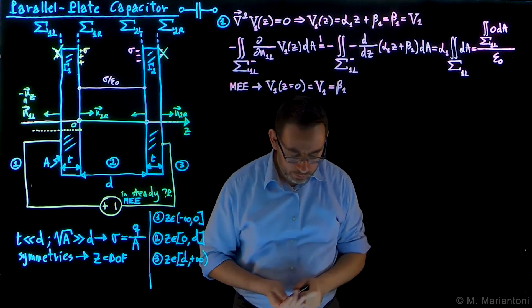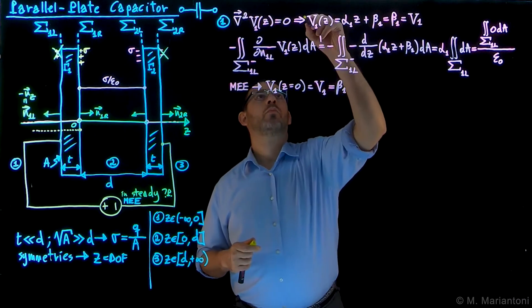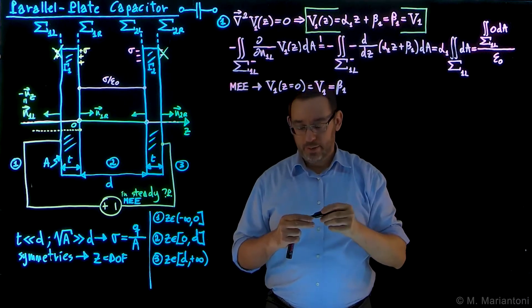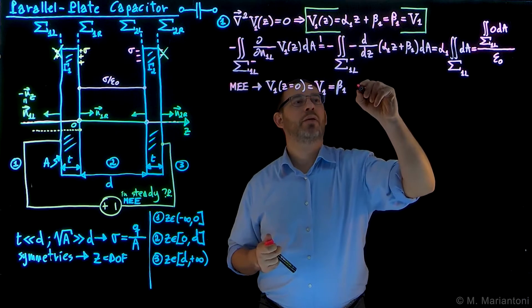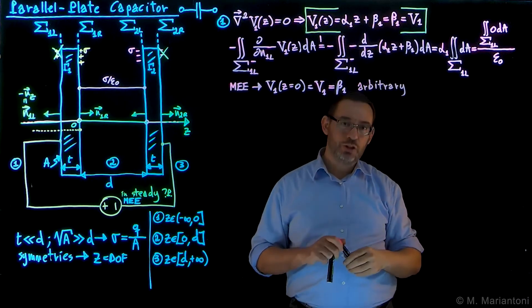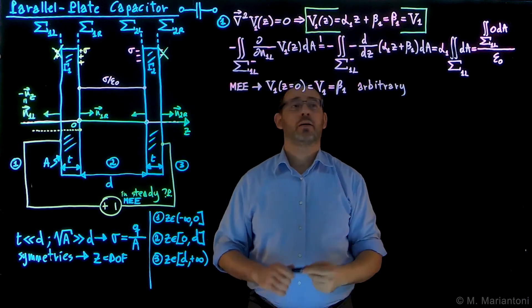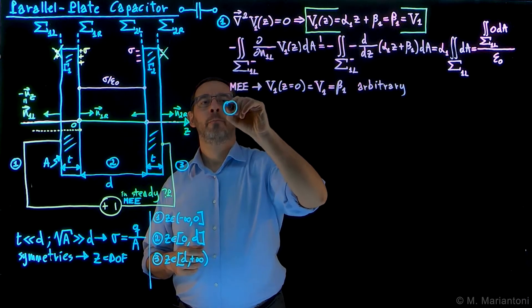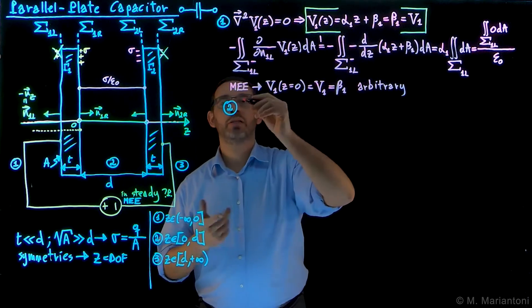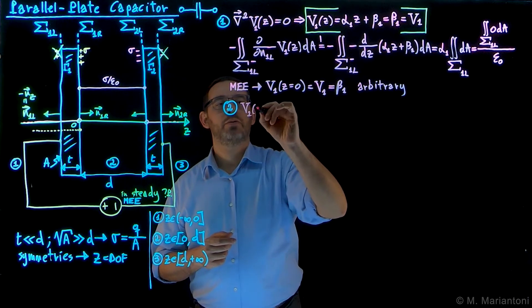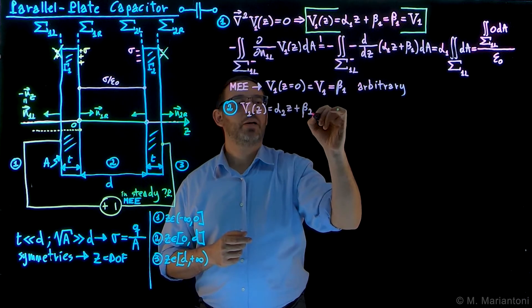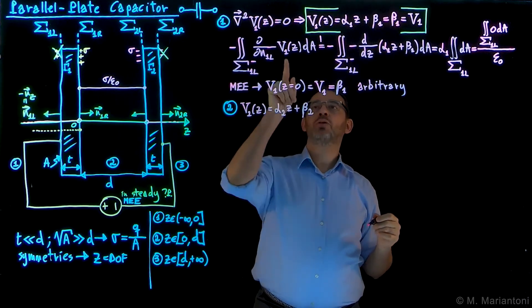So the solution for Region 1 is V₁(z) = V₁ (a constant), which is arbitrary. There will be another constant arising from continuity of the electrostatic potential that is not arbitrary. Now we solve Region 2: V₂(z) = α₂z + β₂, and we need to find α₂ and β₂ using Coulomb's theorem.